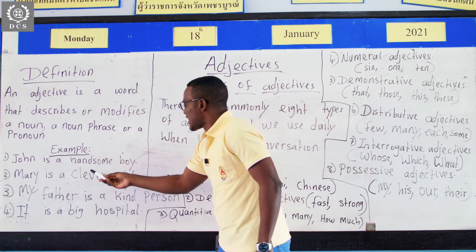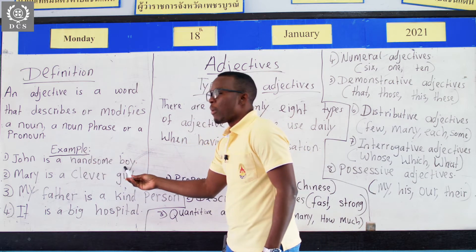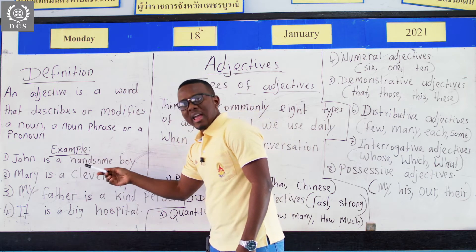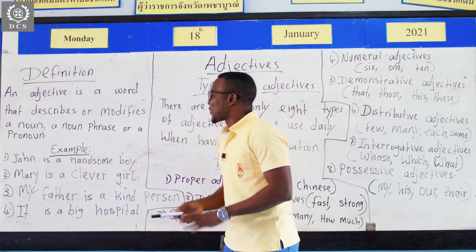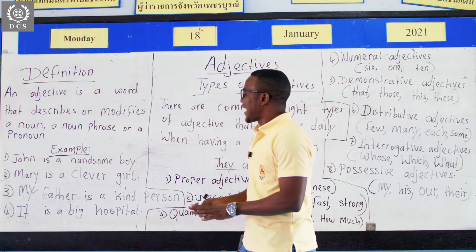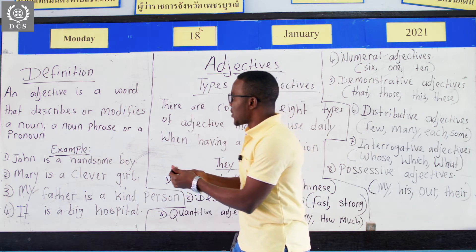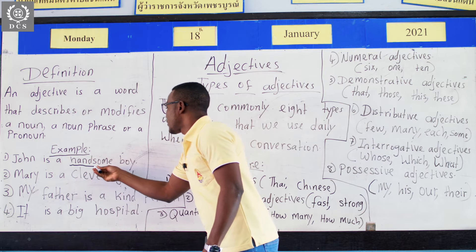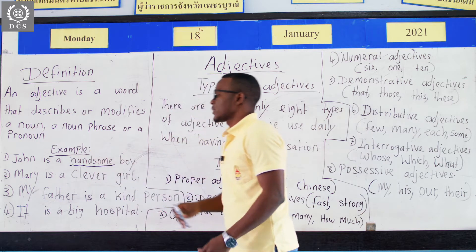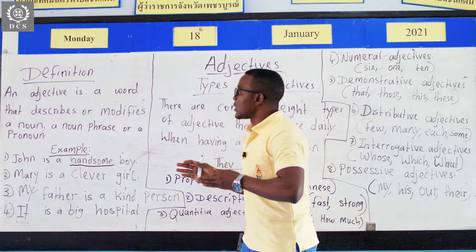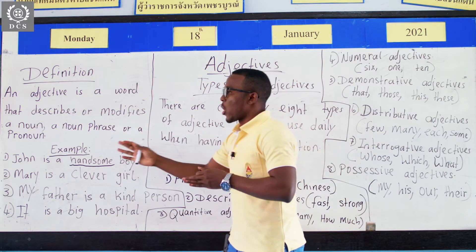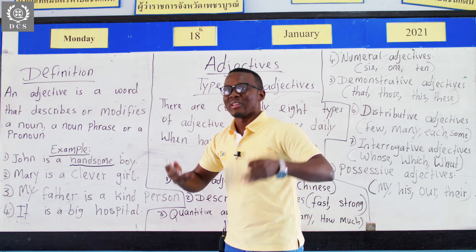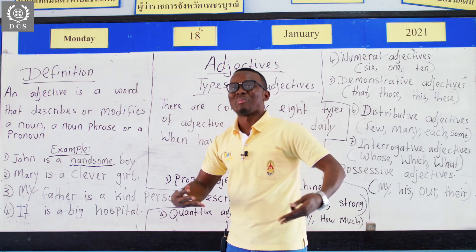John is a handsome boy. So we can see that the adjective here, which is 'handsome,' helps to describe John more. John is a handsome guy.